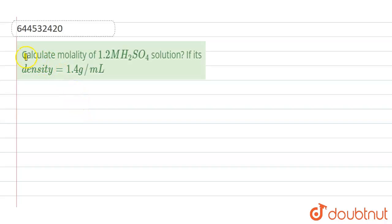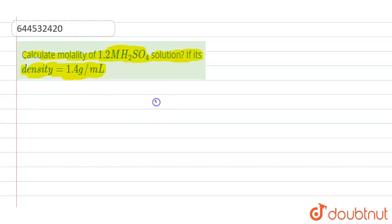The question is: calculate the molality of a 1.2 molar H₂SO₄ solution if its density is equal to 1.4 grams per milliliter. So here, we are given the molarity, that is 1.2 molar.